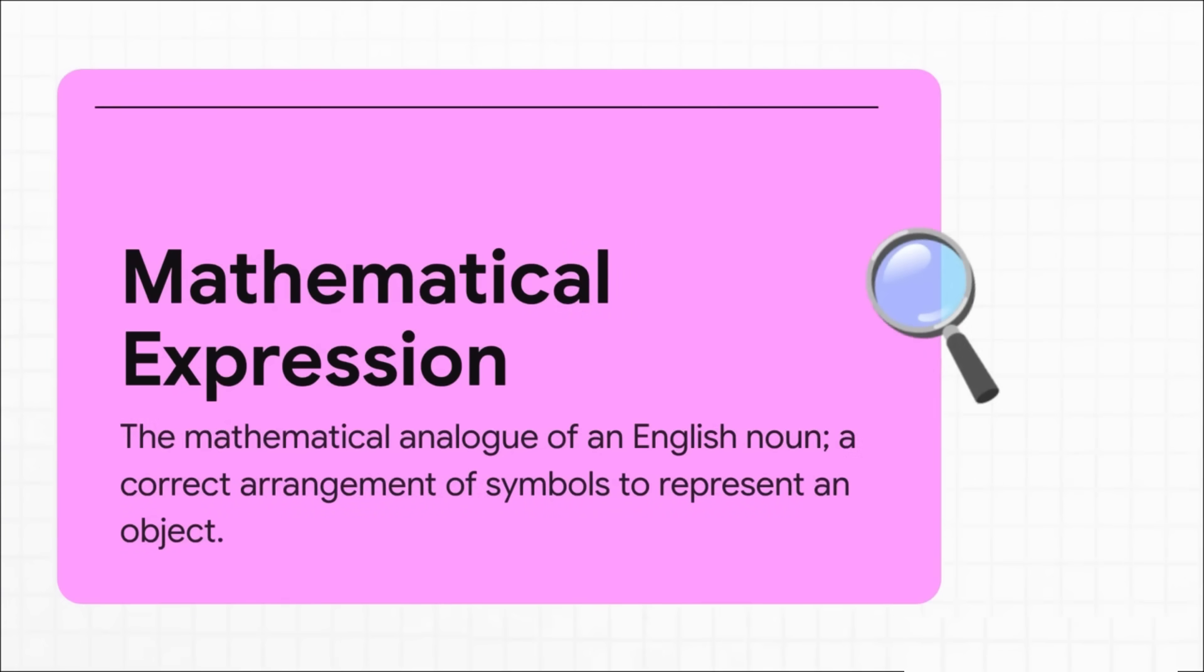So here's the official definition. An expression is just a correct arrangement of math symbols that stands for a single thing, a single object. And that word, object, is super important. An expression gives a name to something, but it doesn't actually say anything about it.